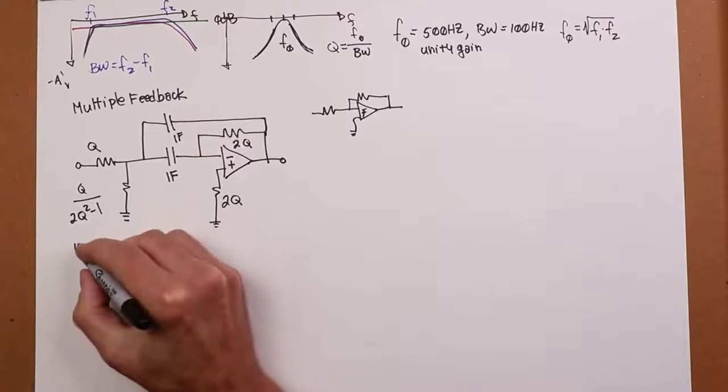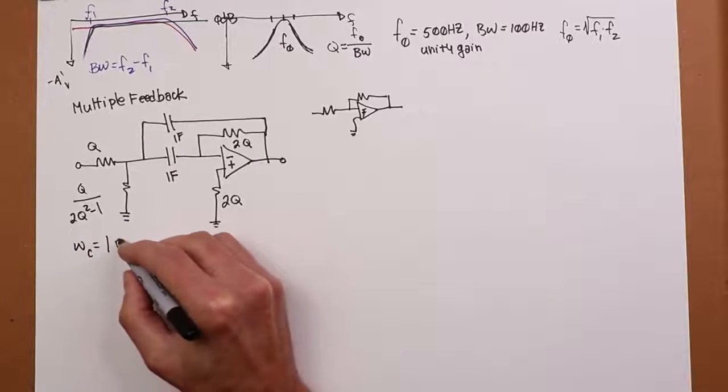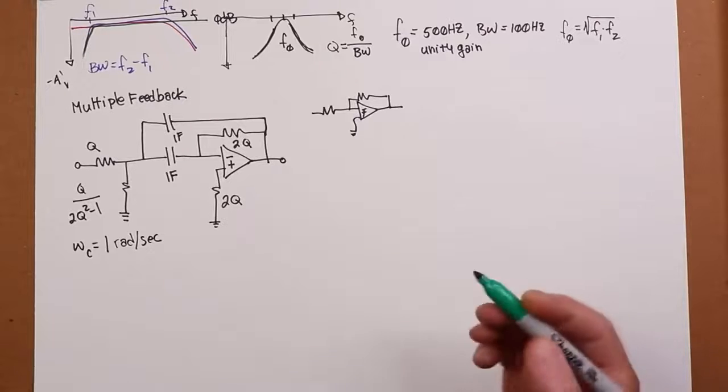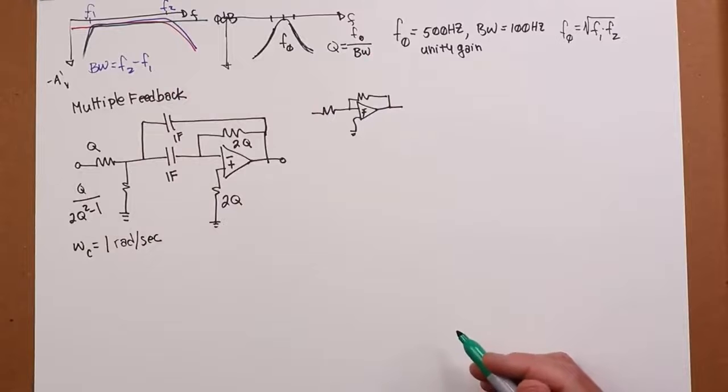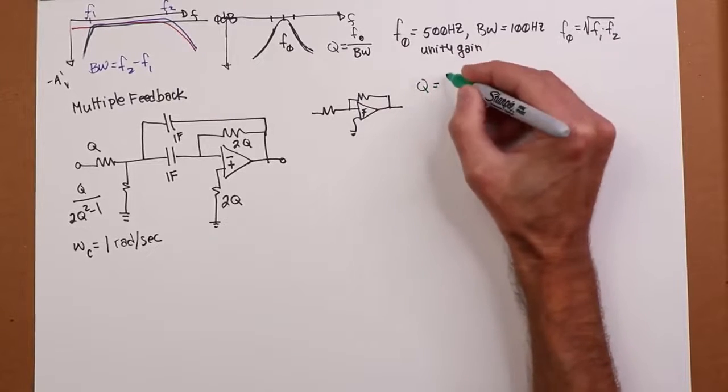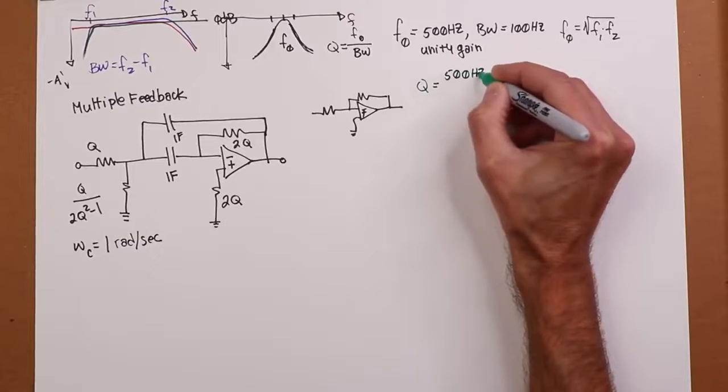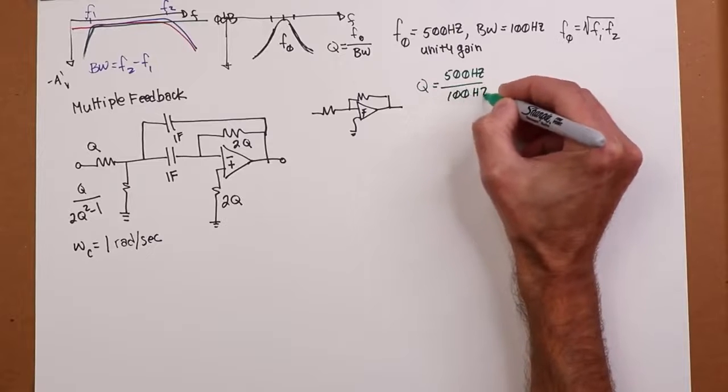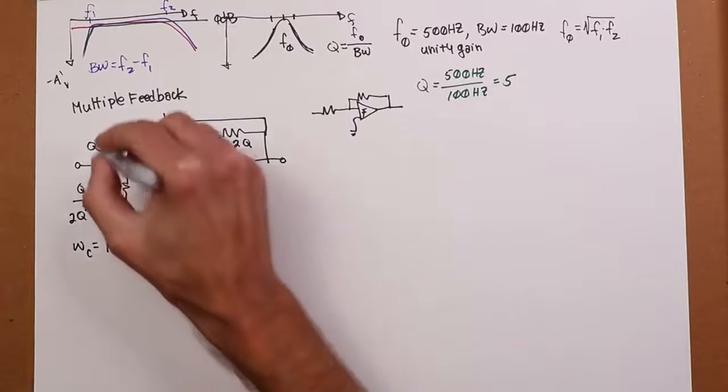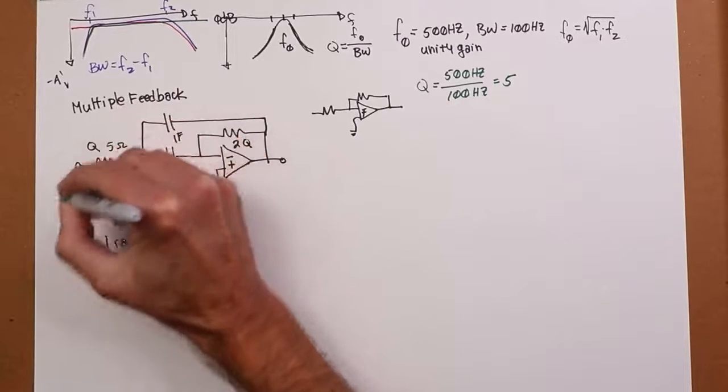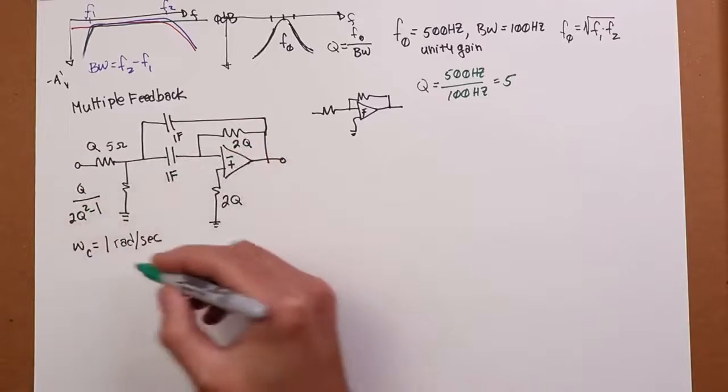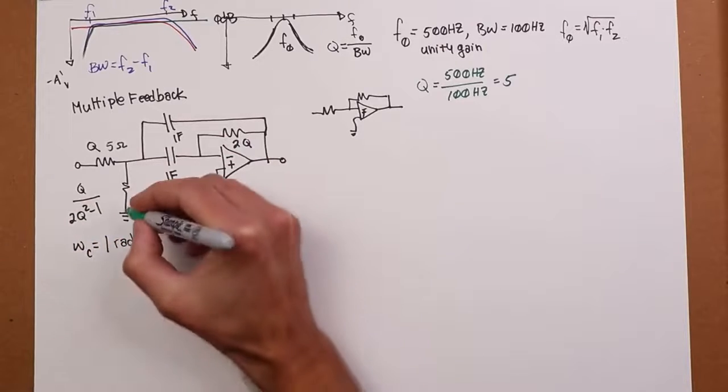One farad, one farad. This resistor is 2 times Q, as is this one. And then over here we have a Q value, and then this is Q. This resistor right here is Q divided by 2Q squared minus 1. So there's derivations of these in the text, but that's the template. So that's our multiple feedback filter. And of course, like all the templates, this is tuned with a critical frequency of one radian per second. So the first thing I need to do is decide Q. What's my Q? How do I find Q? Well, Q is resonant frequency divided by bandwidth. Our bandwidth is 100 Hz, so I can find out what Q is. I'll just take 500 Hz, divide by my bandwidth of 100, and I have a Q of 5.